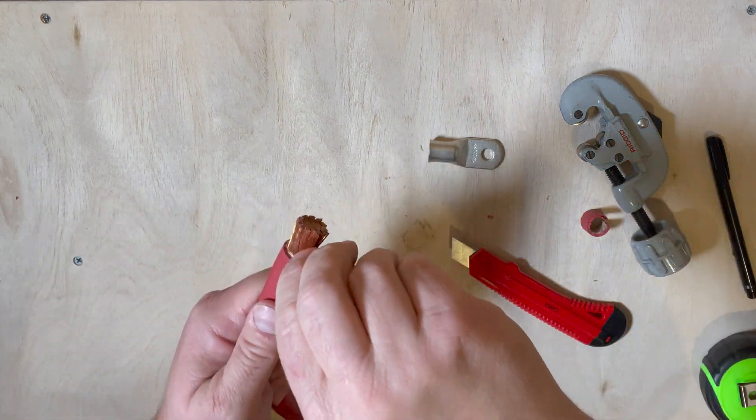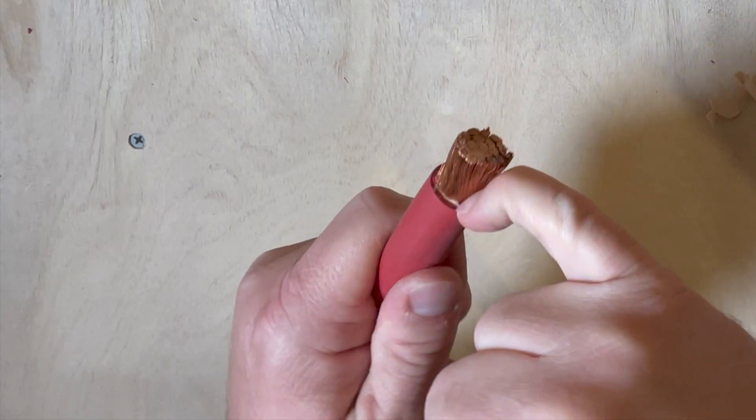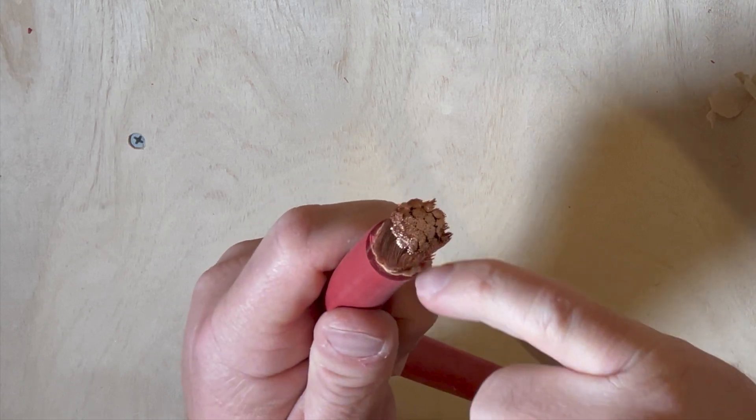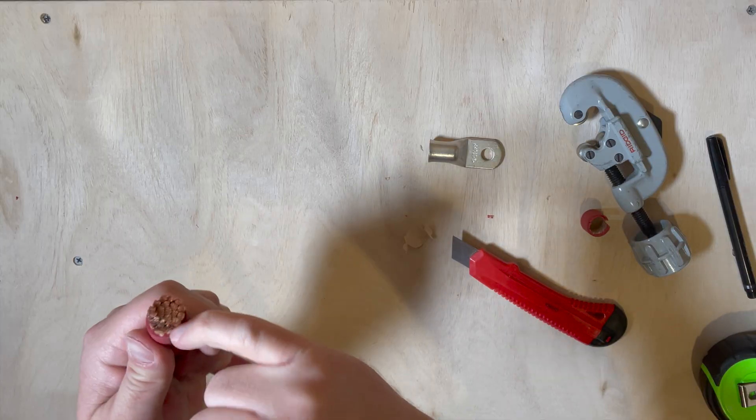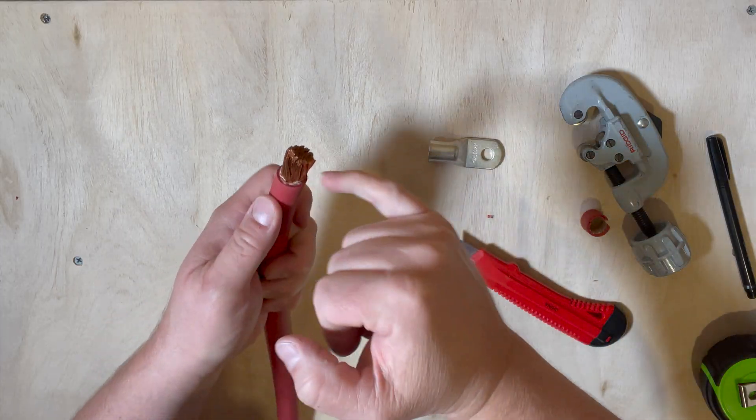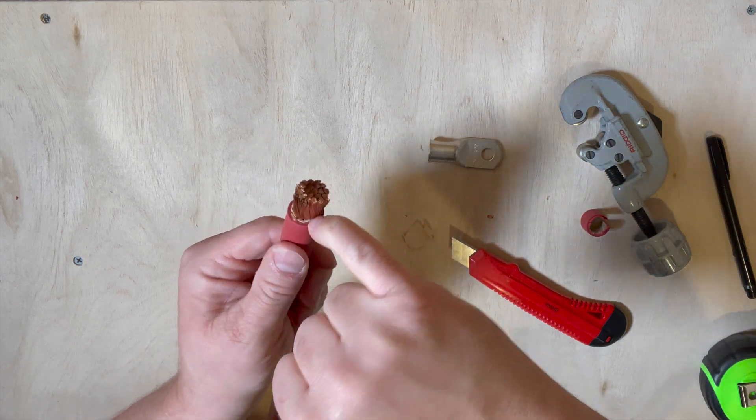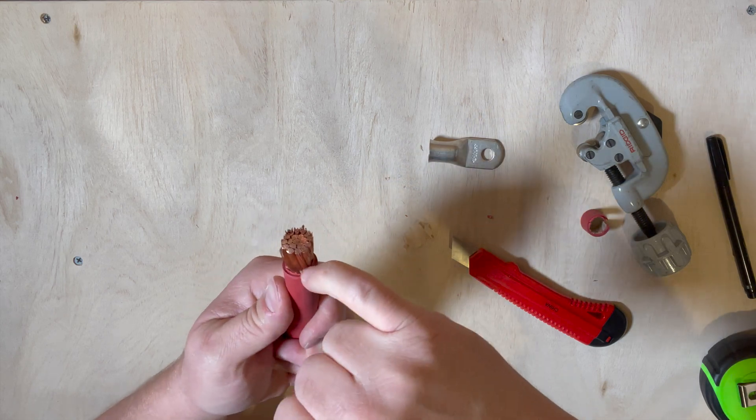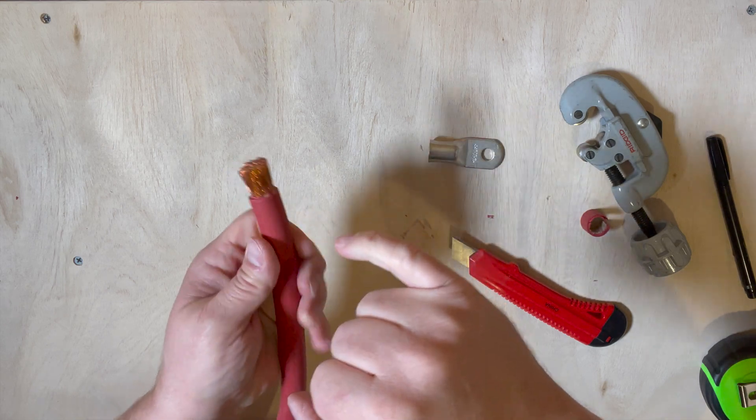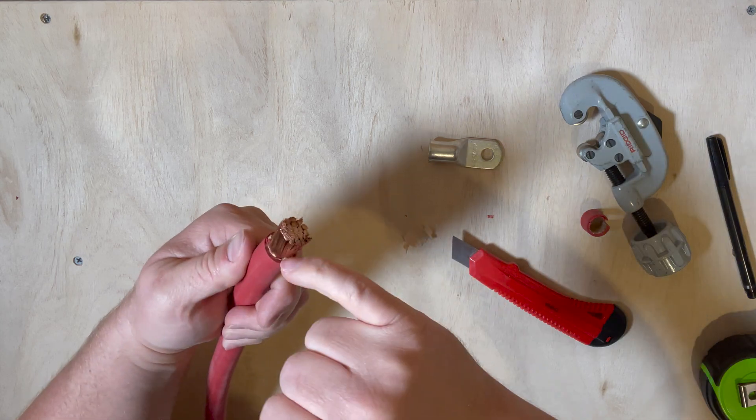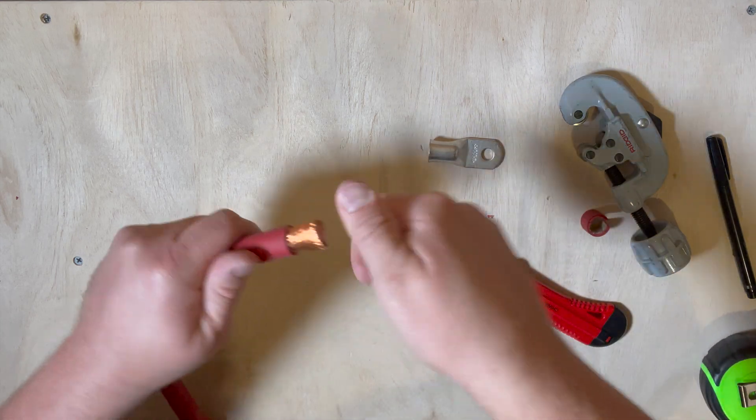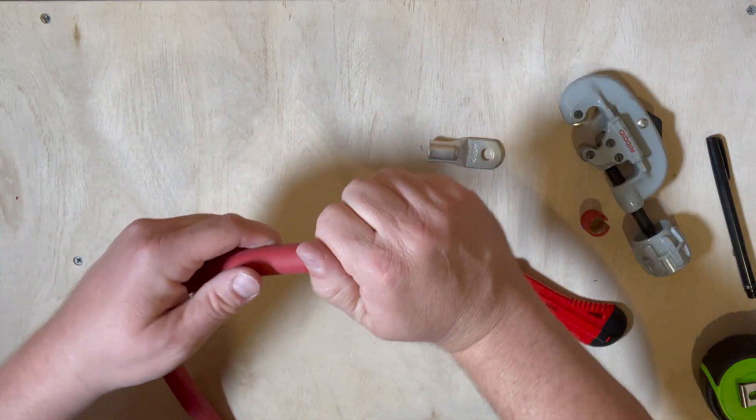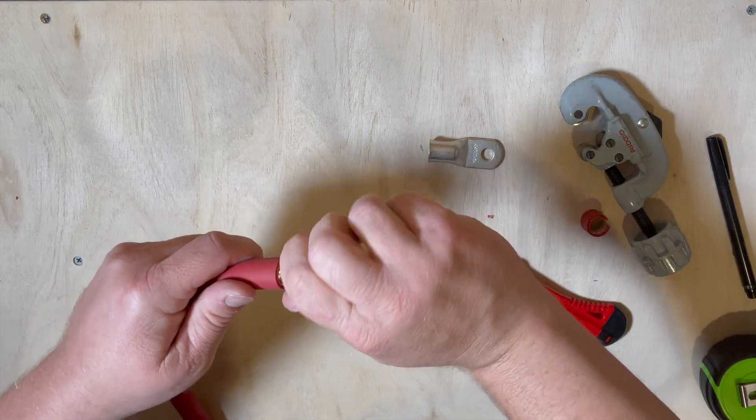And then the paper, whatever doesn't peel off, I'm just going to tuck down with my fingernail. Hope you guys can see what I'm doing there. I'm just kind of tucking that in. Just to get it out of the way of the copper. As you can see, nothing came off. I didn't cut any of the copper.